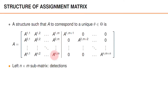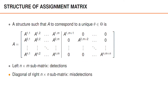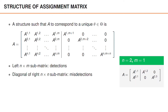For a general assignment matrix, the left n by m submatrix encodes detections — that is, assignments between objects and detections. The right n by n submatrix, specifically its diagonal, encodes misdetections. For the example with two objects and a single detection, the assignment matrix has a left 2 by 1 submatrix and a right diagonal 2 by 2 submatrix.